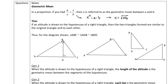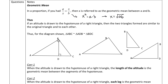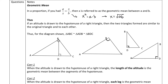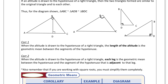Here's a theorem: if an altitude is drawn to the hypotenuse of a right triangle, then the two triangles formed are similar to the original triangle and to each other. So if I drew this altitude down, I've made three similar triangles. Triangle ABC is similar to triangle ADB, and then BDC. Remember, this is where our right angle is for each of these. Based on these three similar triangles, you can set up the sides in proportions according to this similarity ratio.